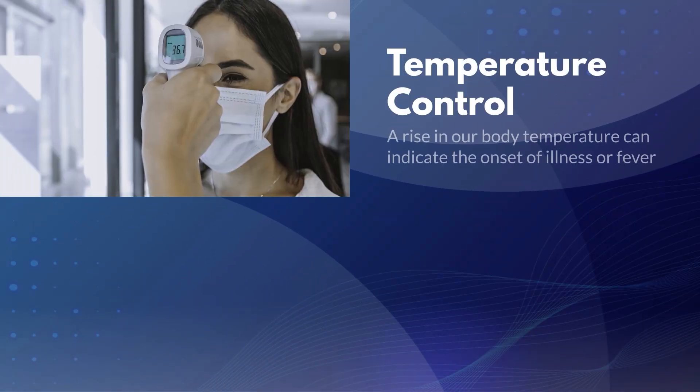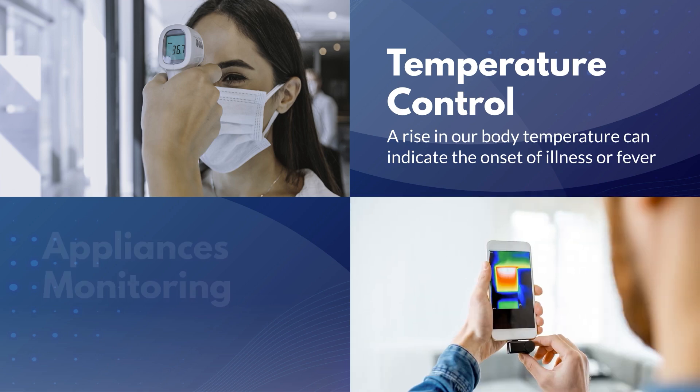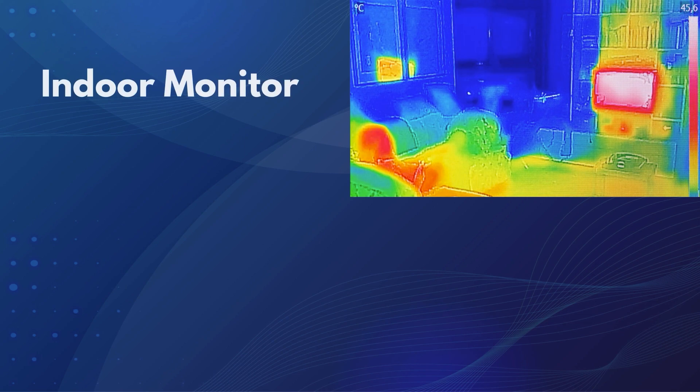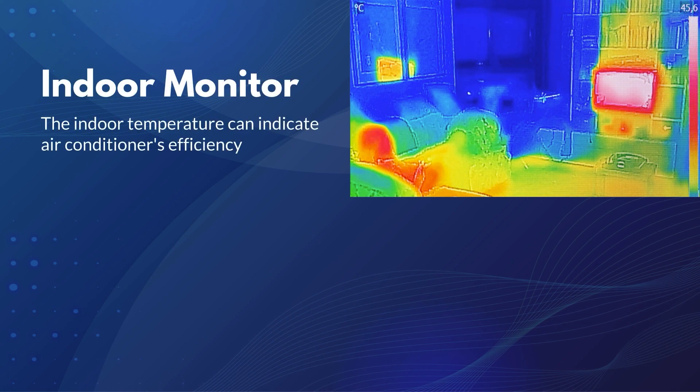For example, a rise in our body temperature can indicate the onset of illness or fever. In our homes, the temperature of home appliances can let us know if they are working properly or are reaching alarming levels. When air conditioners are on, the indoor temperature can indicate their efficiency and determine whether the airflow is distributed evenly.